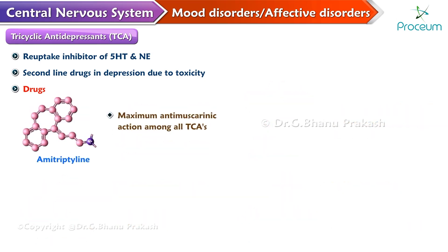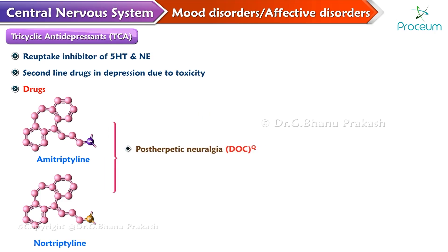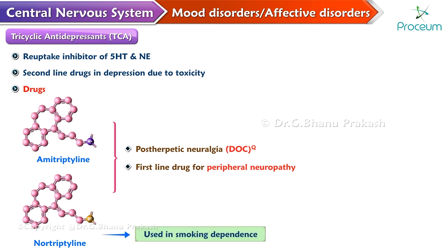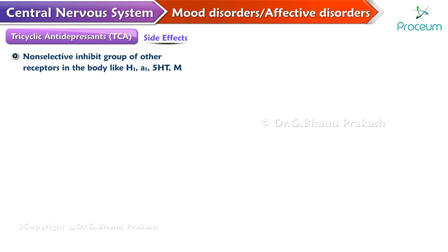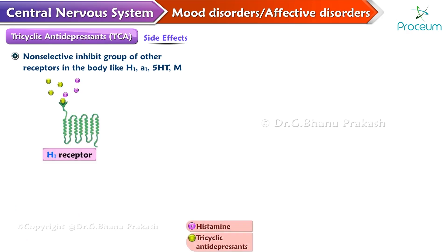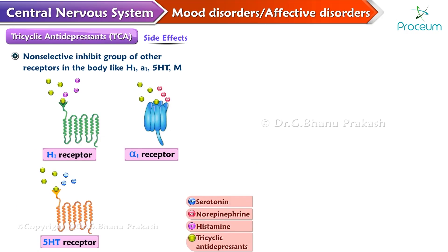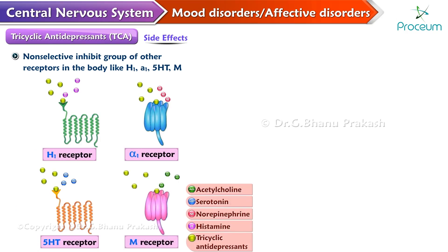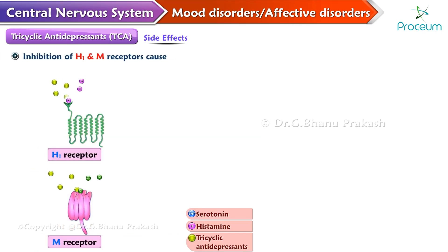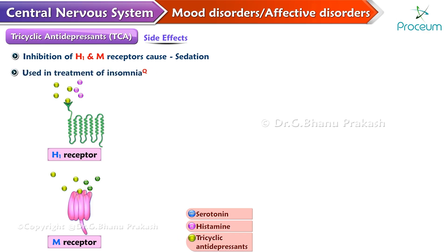Amitriptyline causes maximum anti-muscarinic action among all the tricyclic antidepressants. TCAs like nortriptyline and amitriptyline are drugs of choice for post-herpetic neuralgia and are used as first-line drugs for peripheral neuropathy. Nortriptyline is also used in smoking dependence. The TCAs, being non-selective, inhibit groups of other receptors in the body like H1 receptors, alpha-1 receptors, serotonin receptors, and muscarinic receptors. Due to this, a number of side effects can be listed.